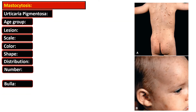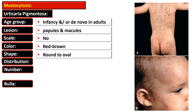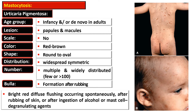Darier sign is positive, there is no scale formation, and occasional bulla formation after rubbing. Urticaria pigmentosa lesions may occur during infancy or arise de novo in adults. The lesions are usually papules and macules, red-brown in color, round to oval in shape, symmetric and widely distributed. The number may vary from a few to more than hundreds. Bulla formation occurs after rubbing, and classically there is bright red diffuse flushing that occurs spontaneously, after rubbing, or after ingestion of alcohol or mast cell degranulating agents.